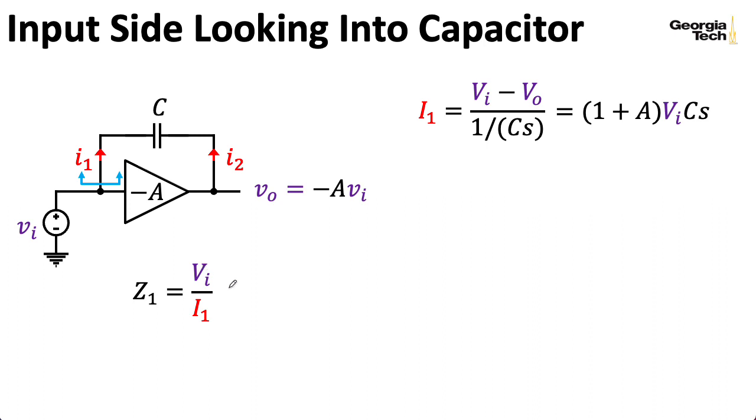So if I want to know what the impedance looking into the left side of the capacitor is, it's the voltage at that node divided by the current. And if I plug in the current, then the voltage winds up canceling, and I wind up with 1 over 1 plus A times CS.